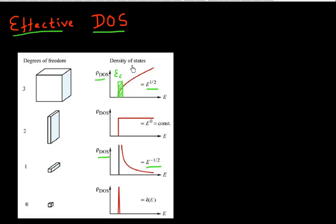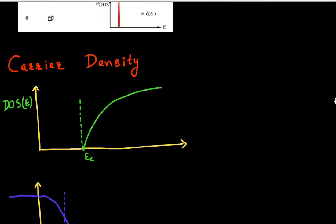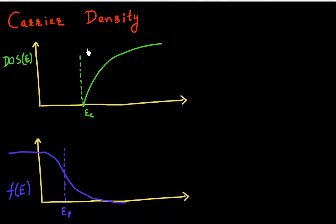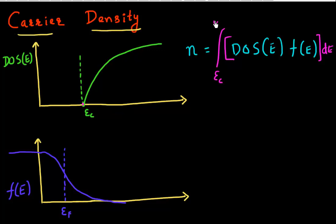Let's start to derive some things we can get from our density of states. If we know the density of states for our conduction band, then we can use it to derive the carrier density — the density of electrons and holes in our semiconductor. That is essentially given by the total number of electrons, which would be given by my density of states multiplied by the probability of their occupation, that is multiplied by the Fermi function. If I integrate this over my conduction band — integrating from the start of my conduction band up to infinity — this integral essentially gives me the total number of carriers.